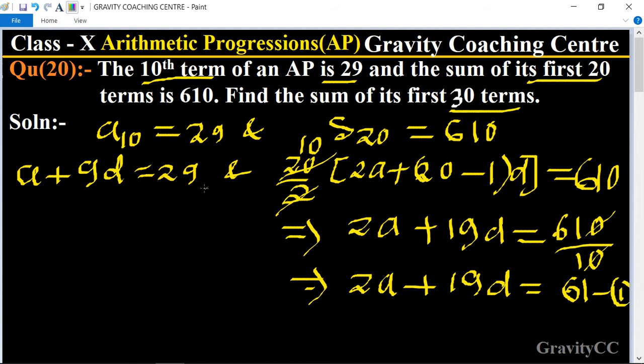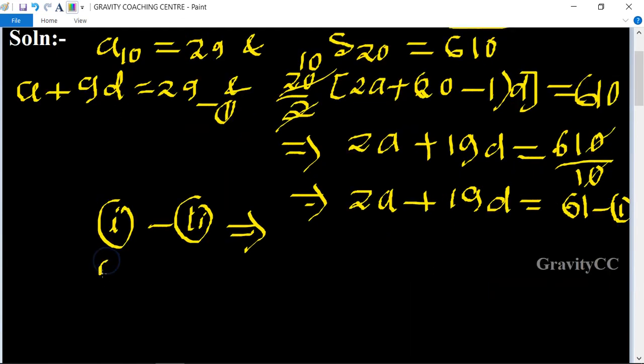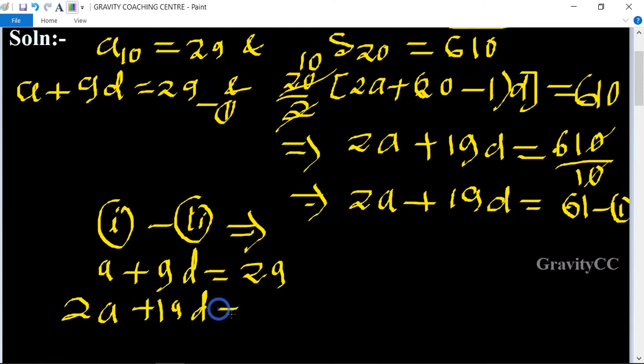And this one is the first. First equation is a + 9d = 29, and second equation is 2a + 19d = 61.